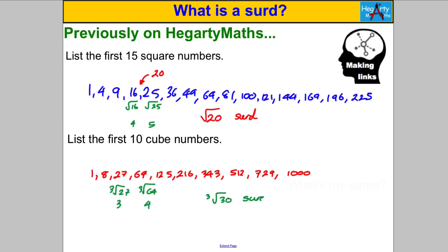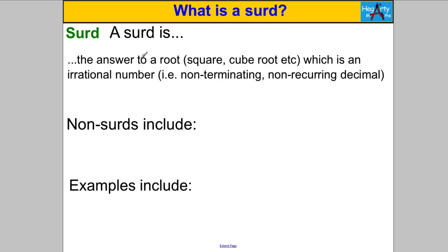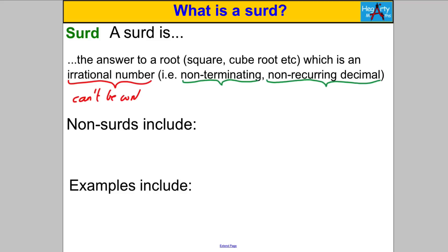So let's formalize what a surd is. A surd is the answer to a root — square root, cube root, etc. — which is an irrational number. By irrational I mean: as a decimal, it does not terminate and it does not form a recurring decimal. Irrational number is the first new type of number we've met — remember all other numbers we've met could be written as a fraction. Irrational means it cannot be written as a fraction, and therefore its decimal does not terminate nor does it recur.